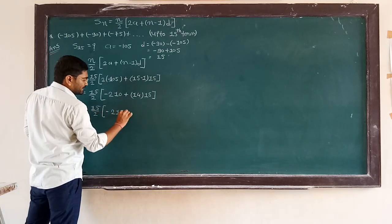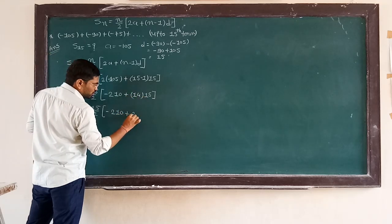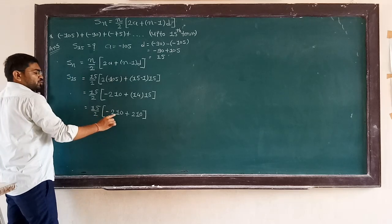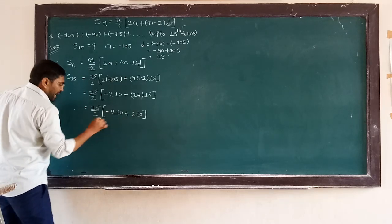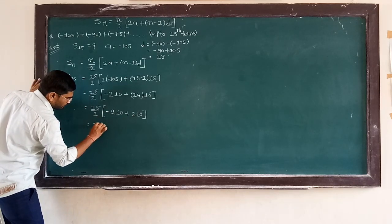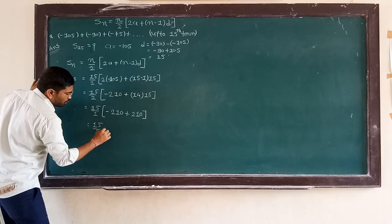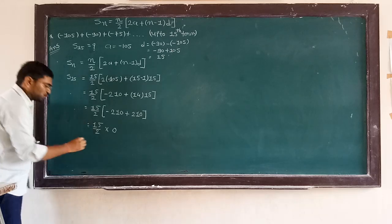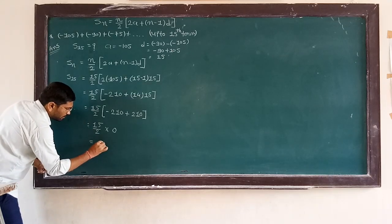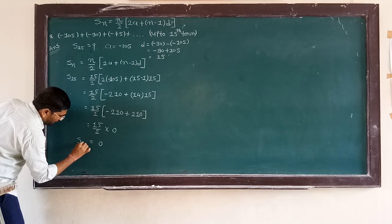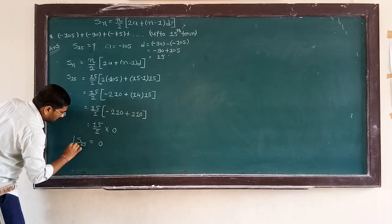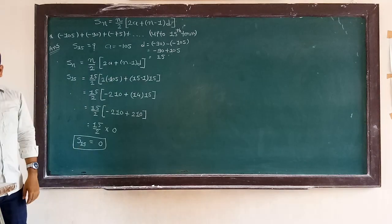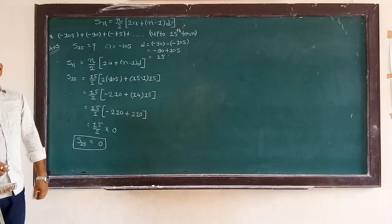Now 14 times 15 is also 210, so we have minus 210 plus 210, which equals 0. Therefore 15 upon 2 into 0 equals 0. So S15 is equal to 0.